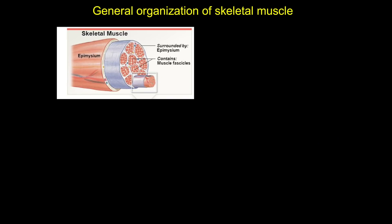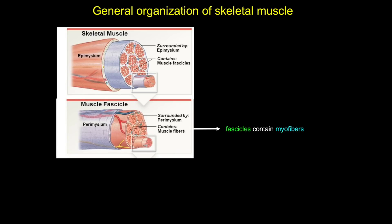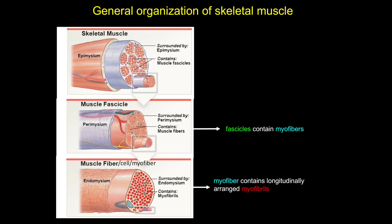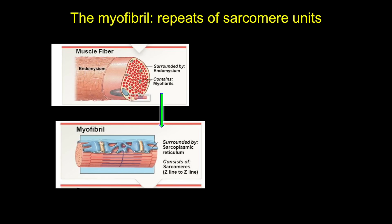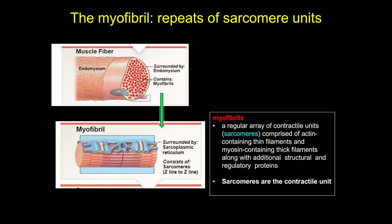Let's review the organization going from the outside of a muscle in. The epimysium surrounds the muscle fascicles; next the perimysium surrounds each fascicle that contains myofibers; and endomysium surrounds each muscle fiber. Each fiber contains longitudinally arranged myofibrils. We'll take a closer look at the organization of myofibrils as they are the basis for striated muscle function — both skeletal and cardiac. Myofibrils consist of repeats of sarcomere units, composed of actin- and myosin-containing filaments and many accessory proteins. The sarcomeres are the contractile unit of striated muscle.